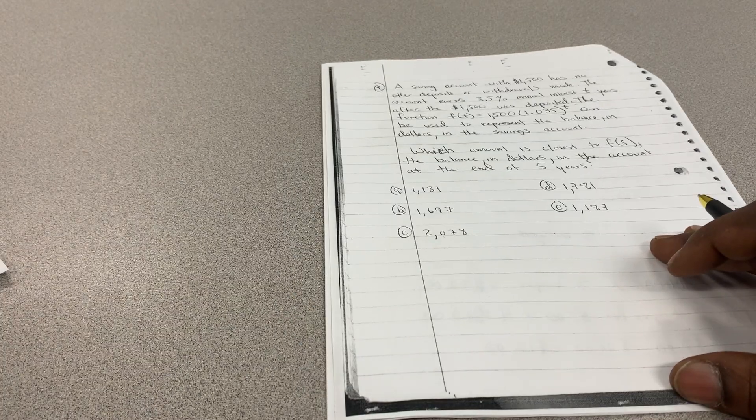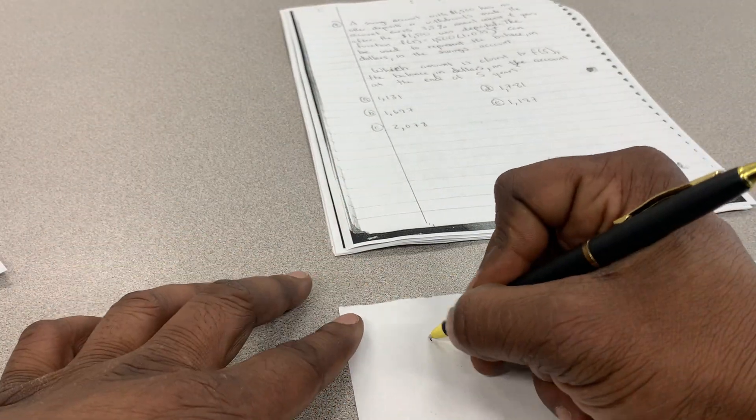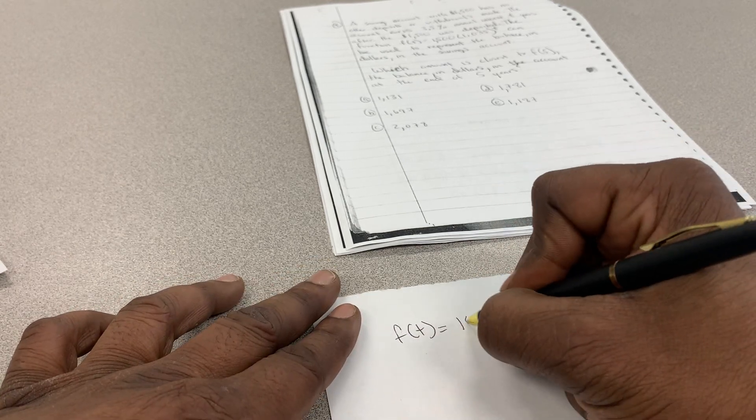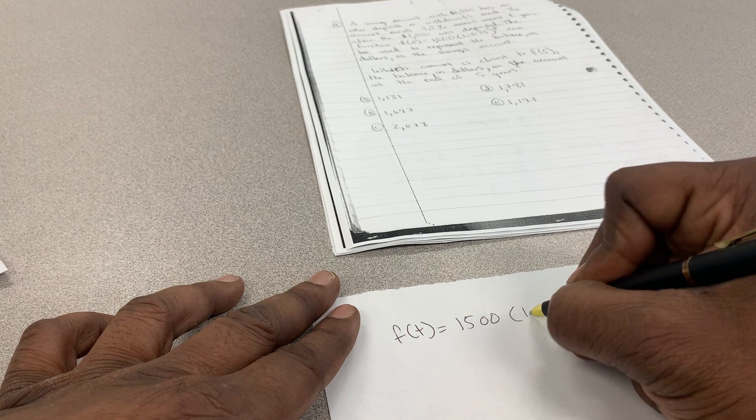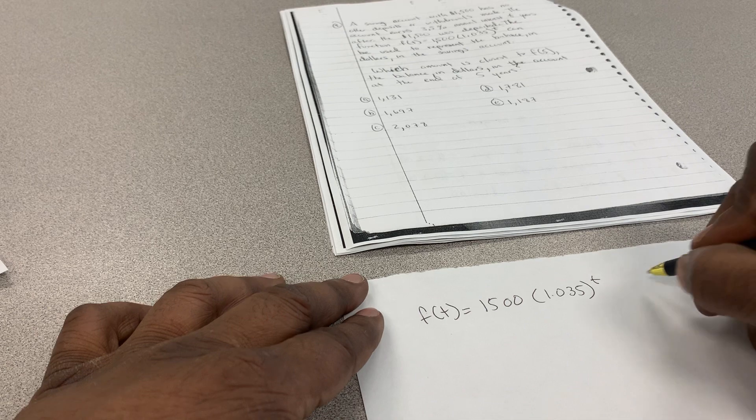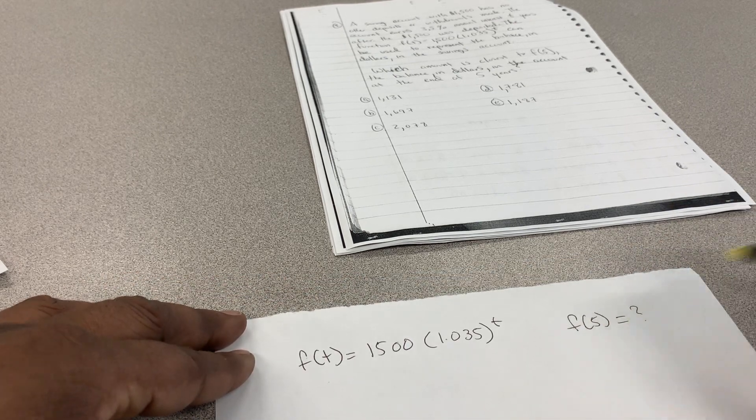So now, I'm going to rewrite this on a piece of scrap paper. I'm going to say f(t) = $1,500 × 1.035^t. And they want to know what is f(5) equal to.